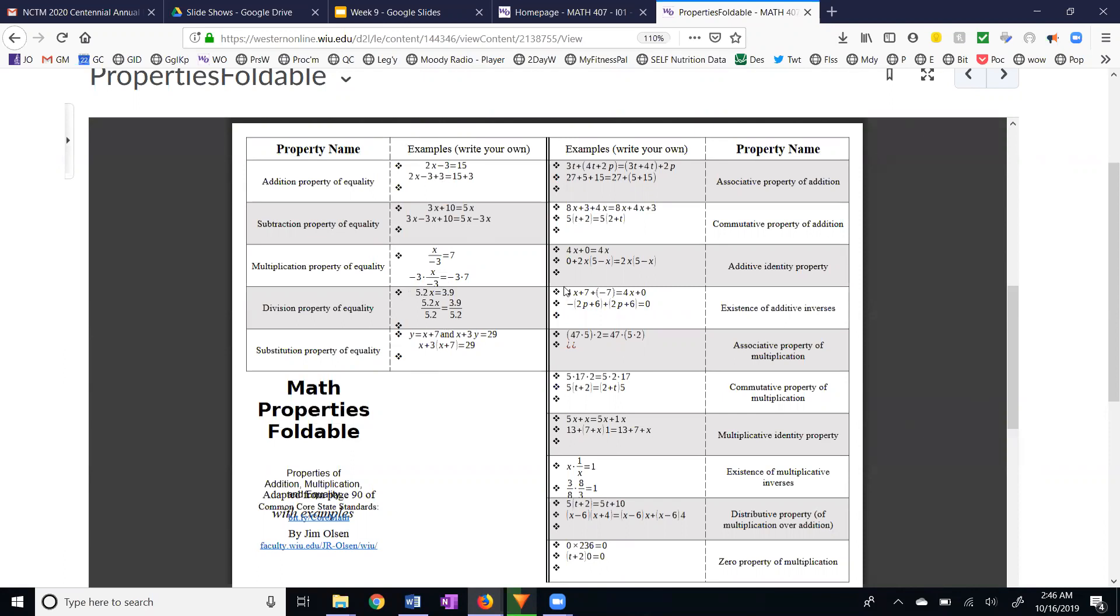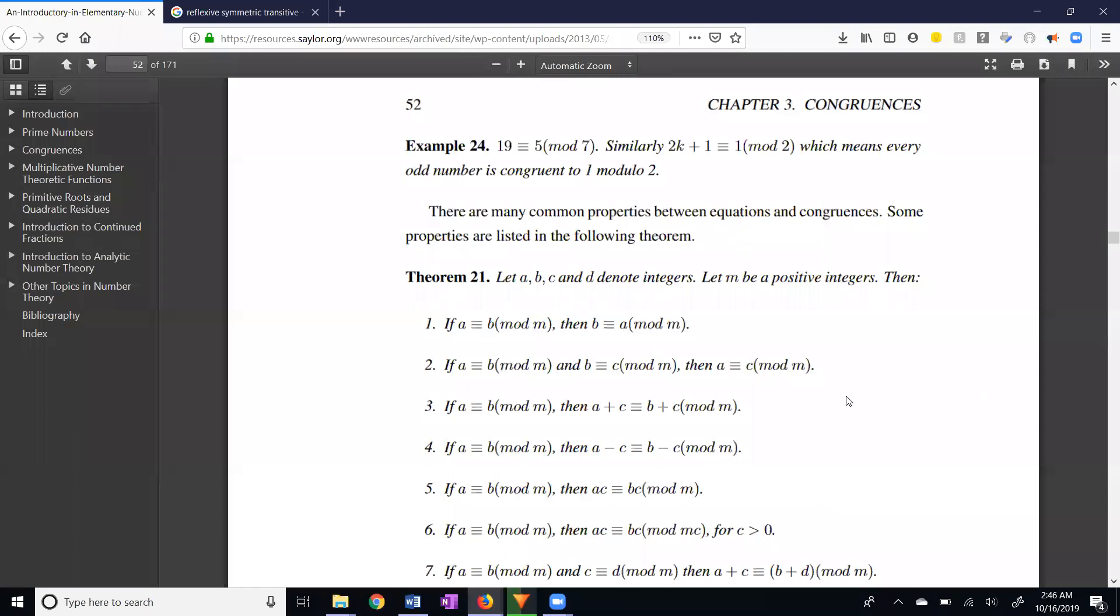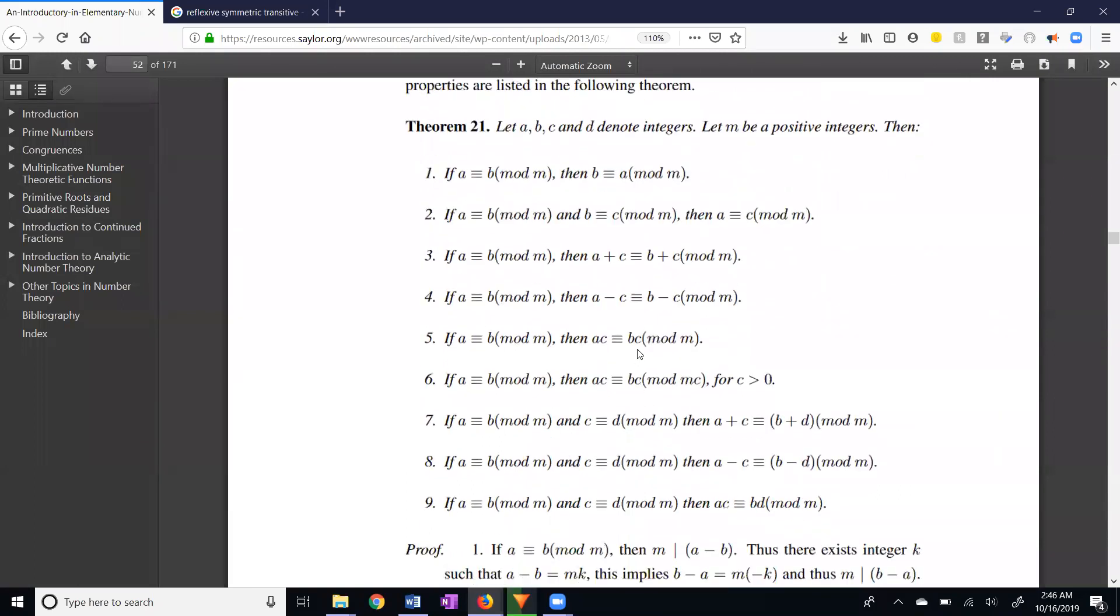Now, in the case of congruence, Property 3 is the addition property of congruence, adding C to both sides. Property 4, subtraction property. Property 5 is the multiplication property. I'm multiplying both sides of the congruence by C. Property 6, I'm multiplying by C, and I'm also multiplying the modulus by C.